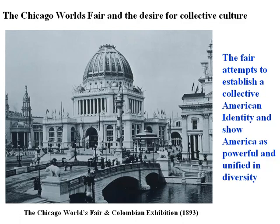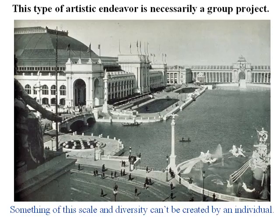Another important event that turned Americans outward to focus on grand collective visions was the Chicago World's Fair, or Columbian Exhibition, of 1893. The organizers attempted to establish a collective American identity, showing America as a powerful nation unified in its diversity. This image shows some of the buildings, bridges, statues, and canals built specifically for the exhibition. This type of artistic endeavor is necessarily about a group — something of this scale and diversity simply cannot be created by an individual. A huge number of people have to work together to achieve such a thing.